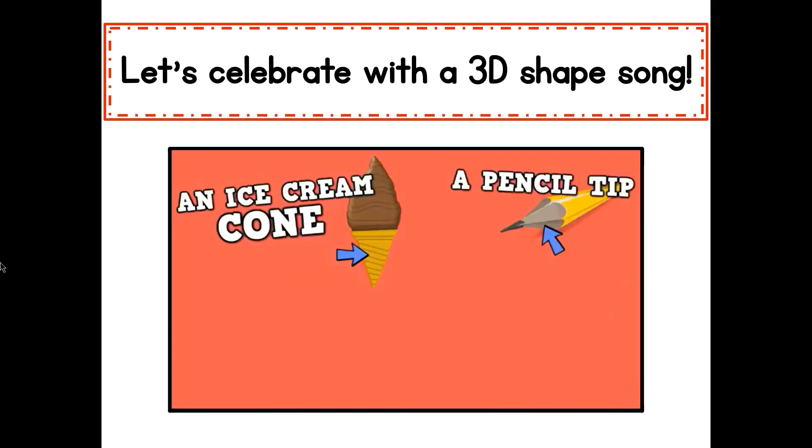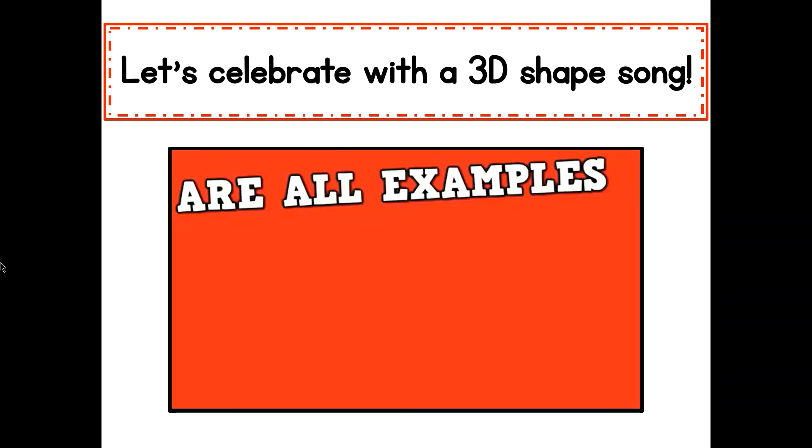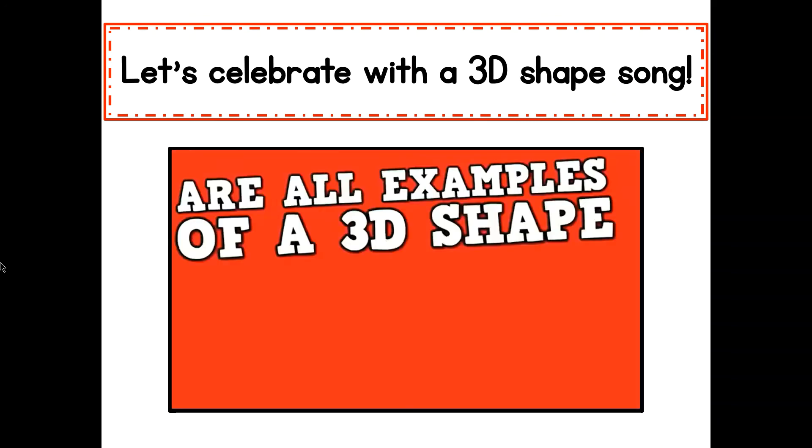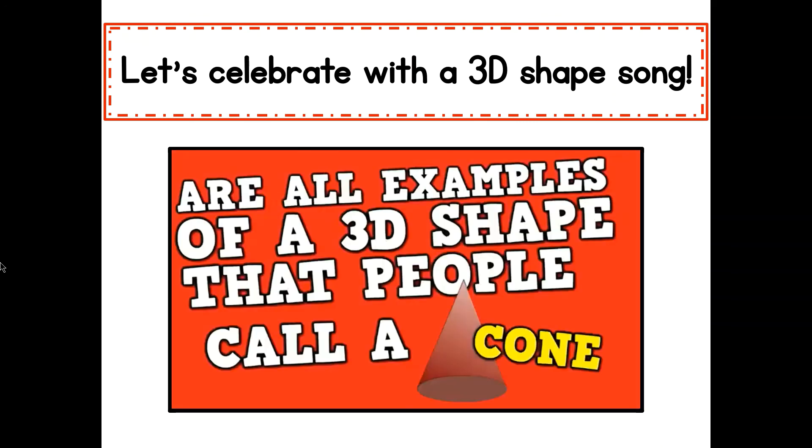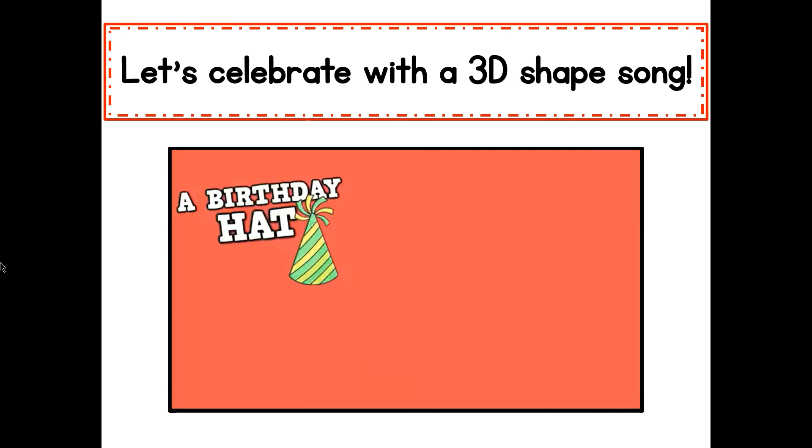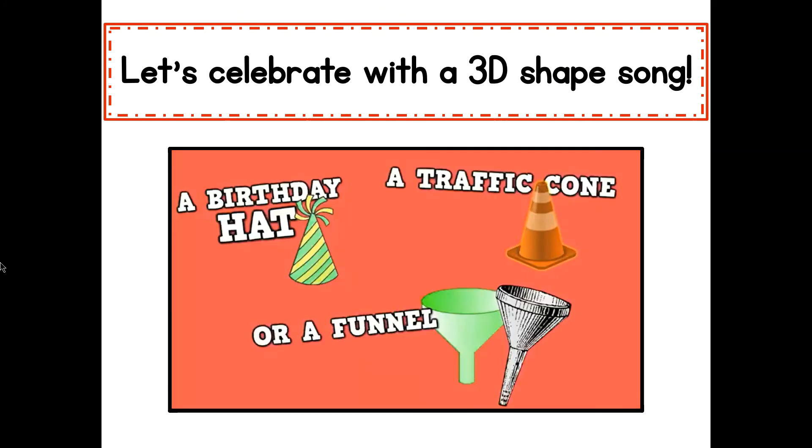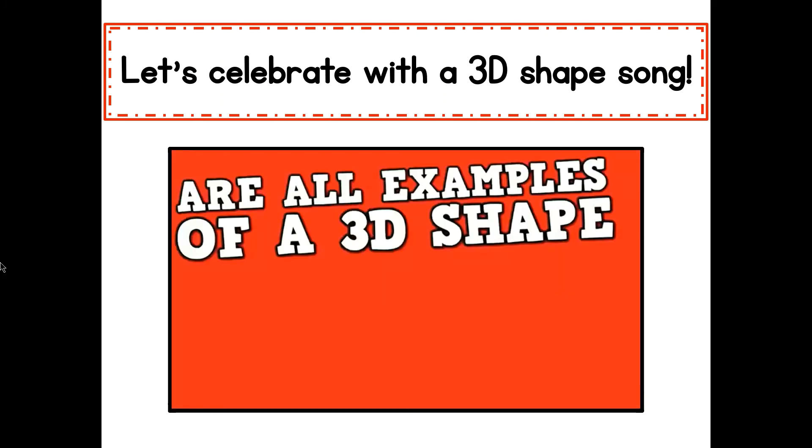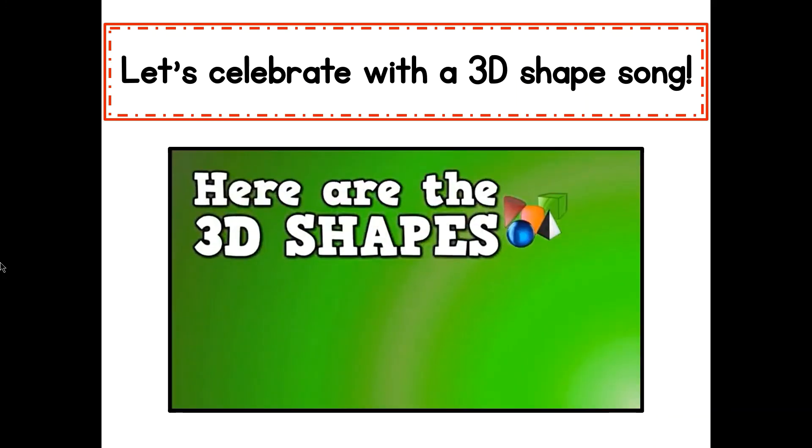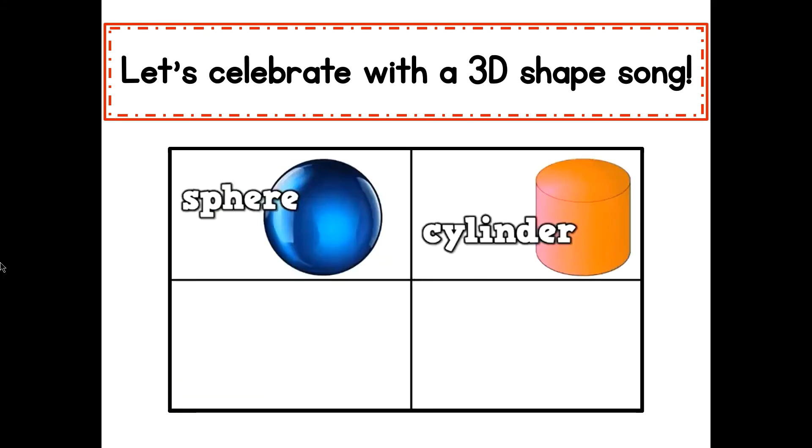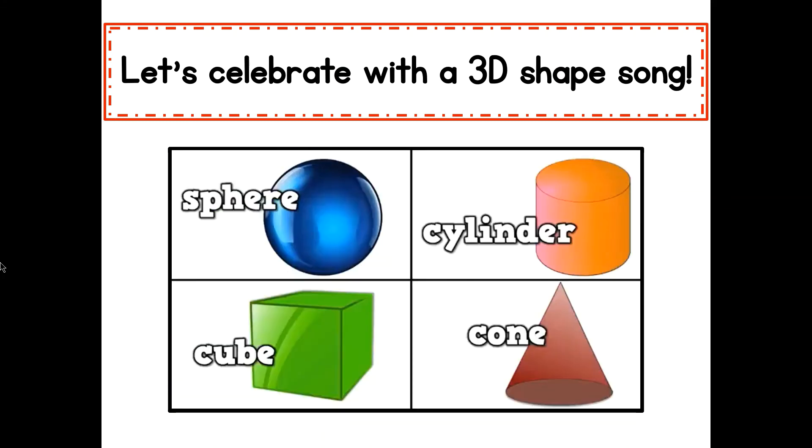Here are the 3D shapes that I know. A sphere, a cylinder, a cube, and a cone. An ice cream cone, a pencil tip, and a megaphone are all examples of a 3D shape that people call a cone. A birthday hat, a traffic cone, or a funnel in my home are all examples of a 3D shape that people call a cone.